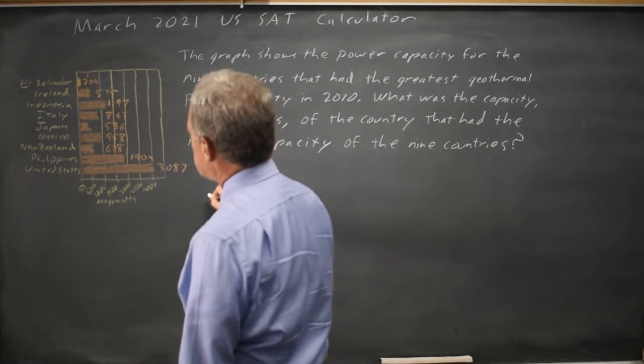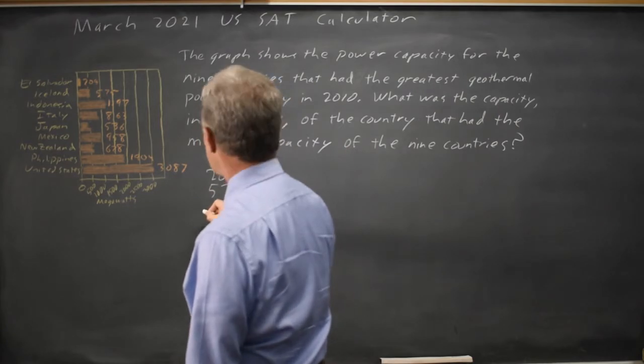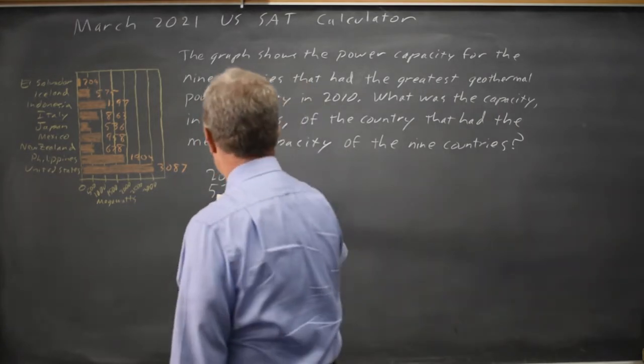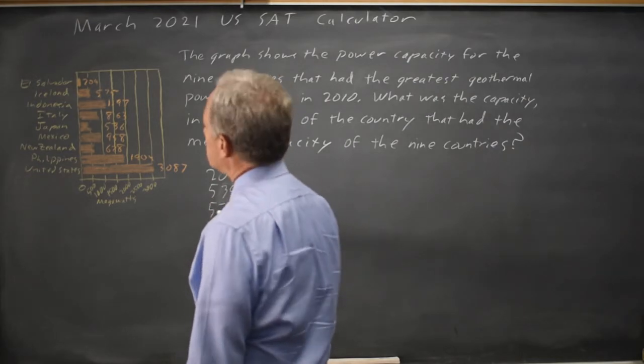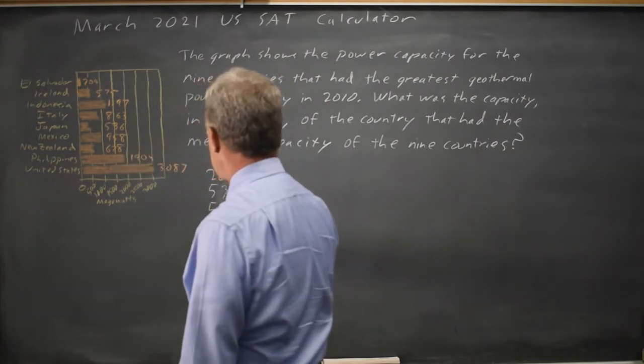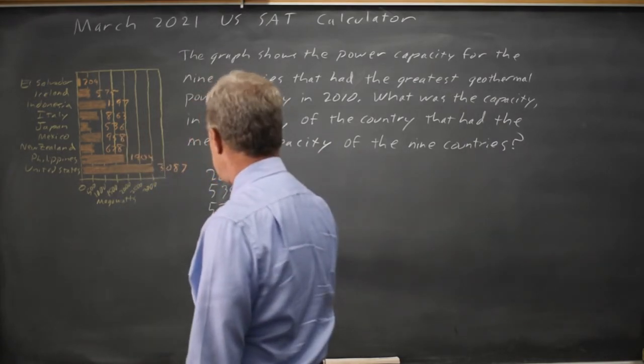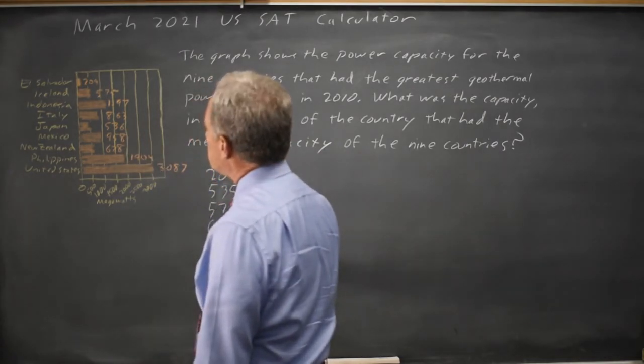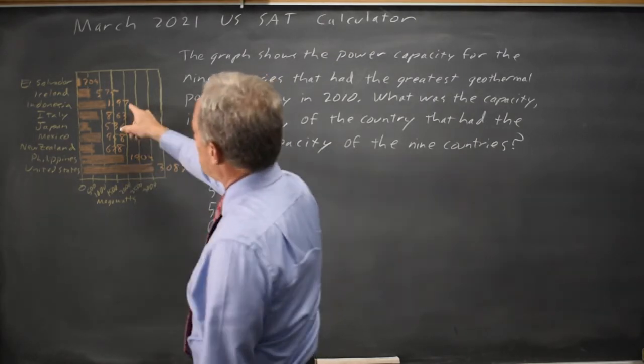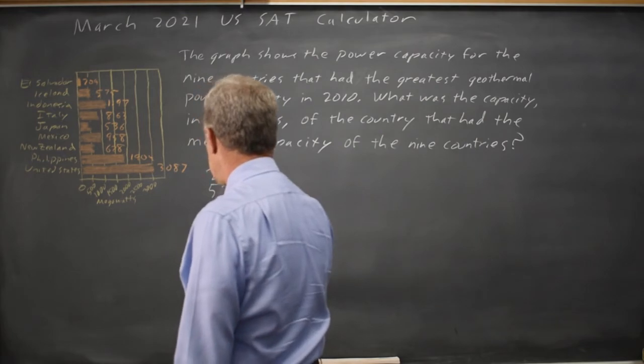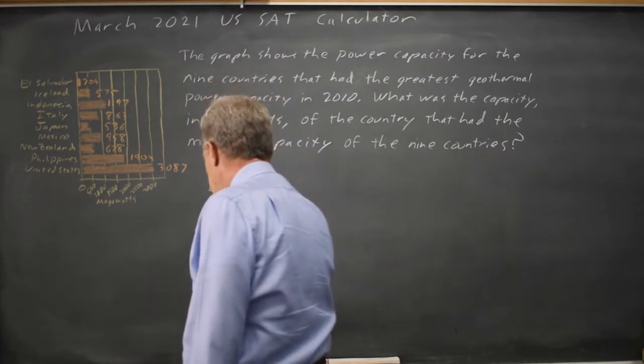204 is the smallest and then we've got 535 is less than that, and then 575, and then in the 600s I have 628, and then nothing in the 700s but I have 863. In the 900s I have 958, 1197, 1904, and 3087.